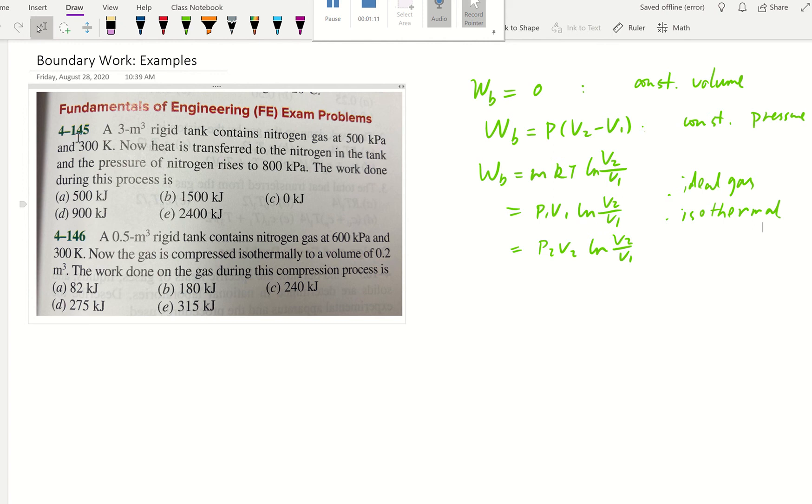Problem 4-145: A 3 meter cube rigid tank has nitrogen gas at initial pressure 500 kilopascal and temperature 300 Kelvin. Heat is transferred to the nitrogen and the pressure rises to 800 kilopascal. What's the work done during this process?